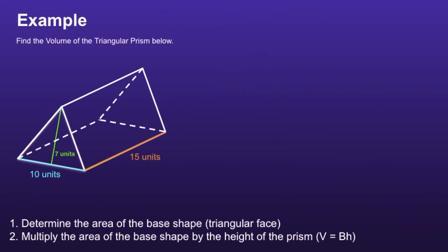Example. There are two steps to find the volume of a triangular prism. Step 1 is to determine the area of the base shape, which we said was the triangular face. The formula to find the area of a triangle is A equals B times H divided by 2. And if we look at the triangle, we can see that the base is 10 units and the height is 7 units. So I can replace the B and the H with 10 and 7.